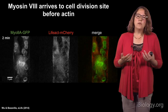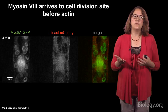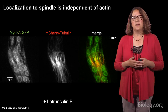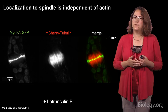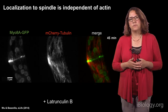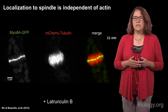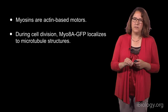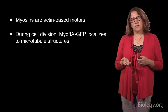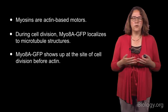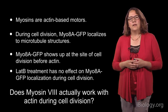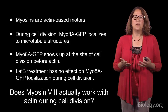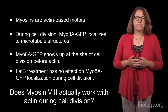We then asked: what happens if we get rid of the actin cytoskeleton? We treated cells with latrunculin, which depolymerizes actin filaments, then looked at myosin and mCherry tubulin to track mitotic spindles and phragmoplasts. Myosin localizes just fine to the mitotic spindle and to the midzone of the phragmoplast during phragmoplast expansion. This was very puzzling. So we did a little recap: myosins are actin-based motors and walk along actin filaments in the cell cortex, but during cell division they seem to be binding to microtubules, not actin. They show up at the site of cell division before actin ever shows up, and their localization doesn't seem to depend on actin during cell division. So we asked: does myosin 8 actually work with actin during cell division, or is it doing something entirely novel?